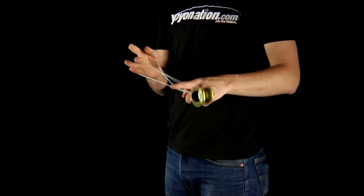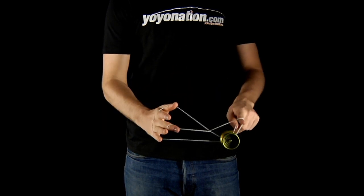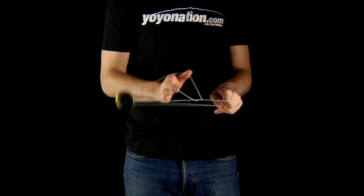Then swing the yoyo over your non-throwhand index so that it rests on the two bottom strings. Swing the yoyo back off and around your throwhand and land again on the two bottom strings.